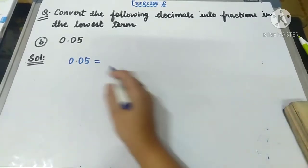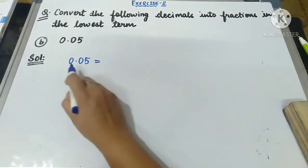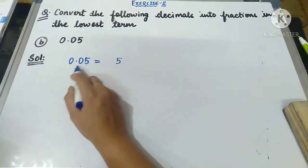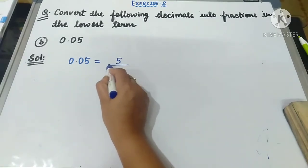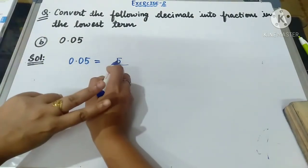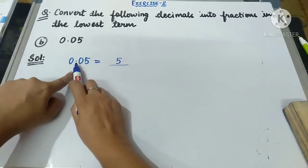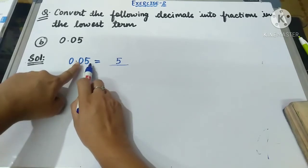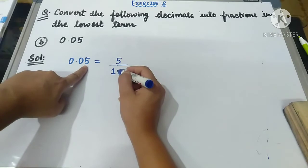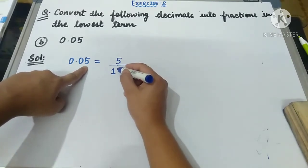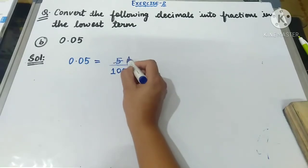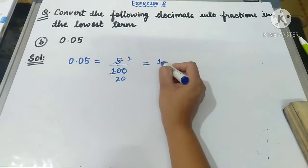Now let us convert 0.05 into a fraction. We write the number other than the leading zero — that is 5 — in the numerator. After the decimal point there are two decimal places, so in the denominator we write 1 followed by two zeros: 5 upon 100. Reducing by dividing by 5: 5 ones are 5 and 5 twenties are 100, giving 1 upon 20.